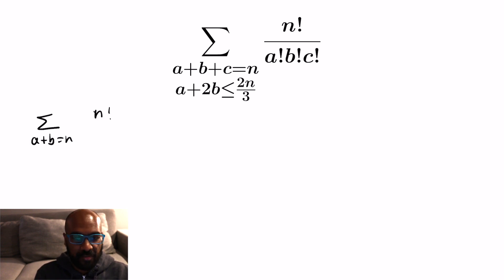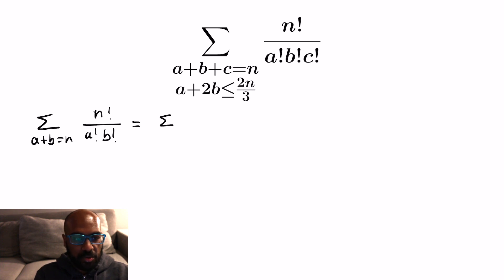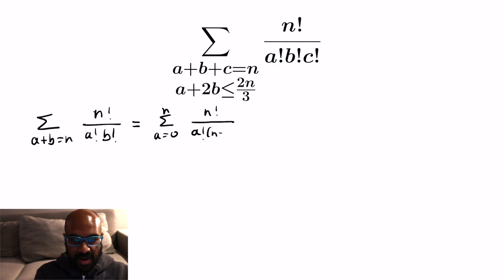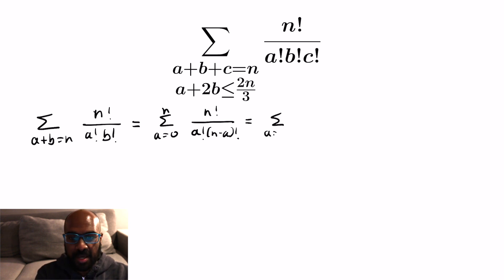Let's say we had only a and b involved and not the inequality condition, and we were summing over all a plus b equal to n: n factorial over a factorial b factorial. Since a is a non-negative integer going between 0 and n, we have n factorial over a factorial times n minus a factorial. If you have some familiarity with binomial coefficients, this is actually the sum from a equals 0 to n of n choose a, and there's a way to determine what this sum is using the binomial theorem.